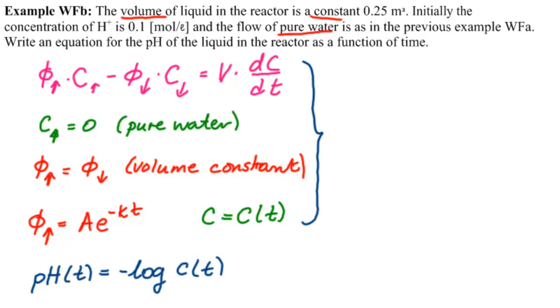Putting all this stuff together, what do we have? We have a differential equation that says 0 minus A e to the minus kt times C of t equals V times dC of t dt. And this is a separable differential equation.